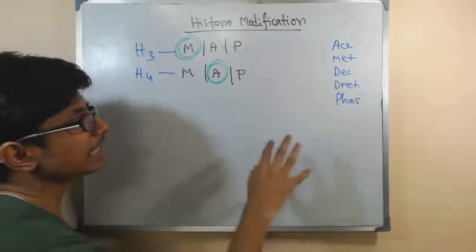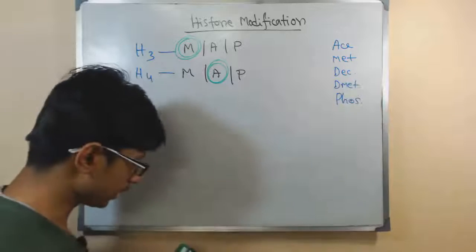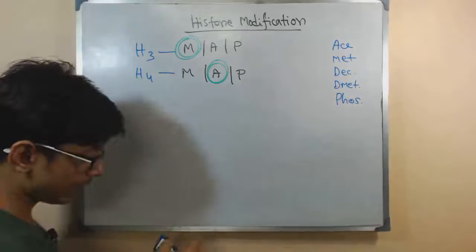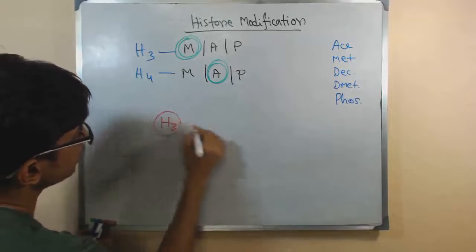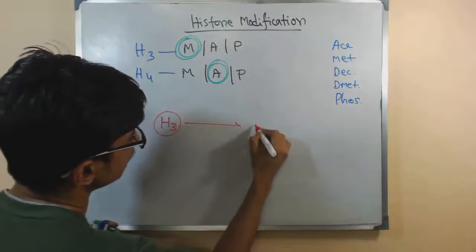If you look at the detailed process of methylation, what will it look like? Let me draw for H3. Let's say this is H3, and now that H3 is methylated.